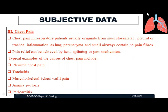Respiratory chest pain originates from musculoskeletal, pleural, or tracheal inflammation and will be relieved by heat application, splinting, or pain medication. Typical causes include pleuritic chest pain, tracheal inflammation, or musculoskeletal chest wall pain. Angina pectoris or pericarditis also manifests with chest pain, but we must rule out whether it is respiratory or cardiac. If the patient has chest pain while coughing, it indicates a respiratory problem; if chest pain occurs at rest and radiates to other parts of the body, it may correlate with cardiac problems.